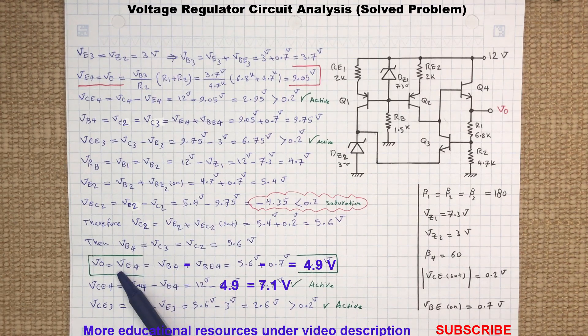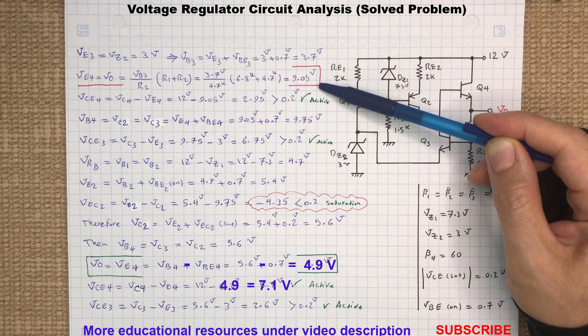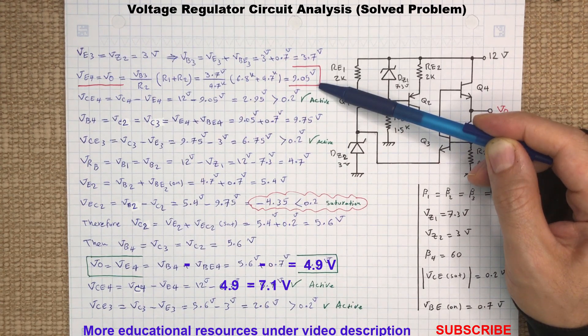Finally, the output voltage will be the voltage at the base of Q4 minus the base-emitter voltage. And as you can see here, this is very different from the output voltage we initially assumed, and this difference is due to Q2 being in the saturation region.